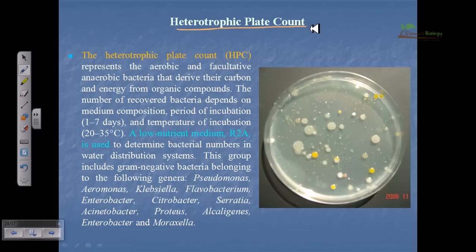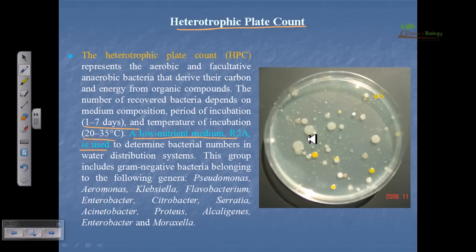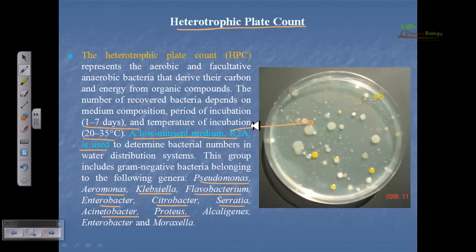The heterotrophic plate count (HPC) technique represents aerobic and facultative anaerobic bacteria that derive their carbon and energy from organic compounds. The number of recovered bacteria depends on the medium composition and incubation period — typically one to seven days at 20 to 35°C. A special low-nutrient medium, R2A, is used to determine bacterial numbers in the water distribution system. This group includes gram-negative bacteria such as Pseudomonas, Aeromonas, Klebsiella, Flavobacterium, Citrobacter, Serratia, Enterobacter, Acinetobacter, and Proteus.